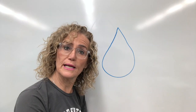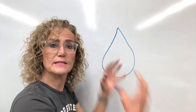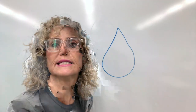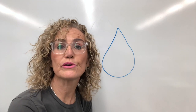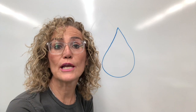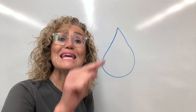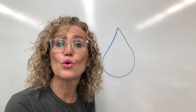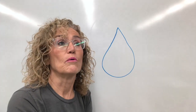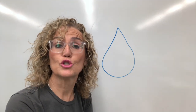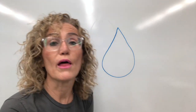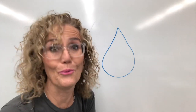Gravity is pulling the water drop down, but the water molecules are holding on tight and creating surface tension. Last week, we saw that different materials interact with water in different ways. Wax paper and aluminum foil — the water beads up, it does not absorb, so those materials are waterproof. Paper towel, tissues, and toilet paper all absorb the water; they are not waterproof.